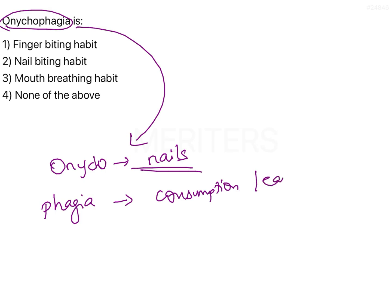Onychophagia basically means the nail biting habit. This is a habit that usually develops in late childhood, after about six years of age, although there is no age restriction or limit.